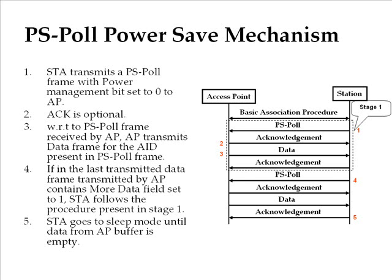The AP sets the TIM field in the beacon frame to indicate that packets destined for the station have been queued. The station wakes up from sleep every listen interval to receive the beacon frame, and when it detects that the TIM field has been set, it sends a PS-Poll frame to the AP with the power management bit reset.